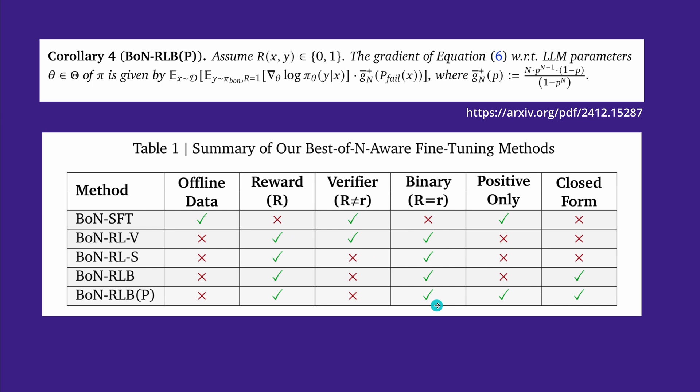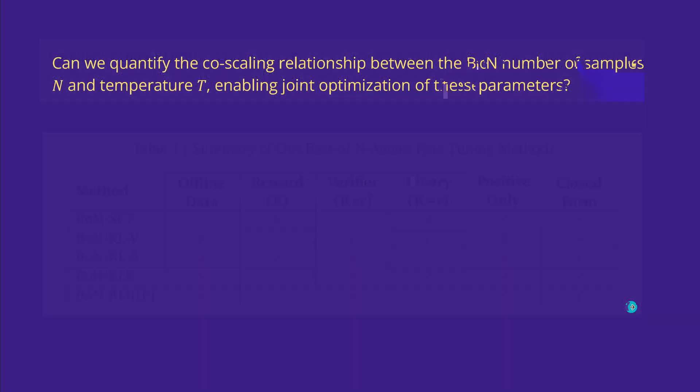The first one uses a verifier that is different. Or if you go with a binary verifier, you go only with the positive forms. Or if you can achieve a closed form. Those are all the different permutations of the model.